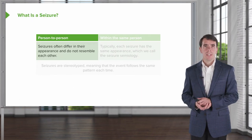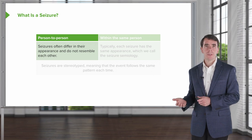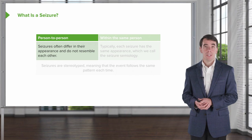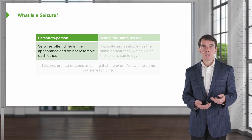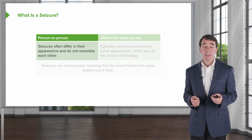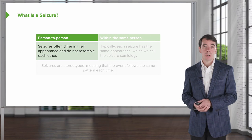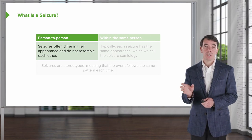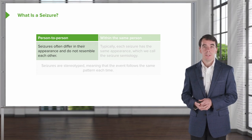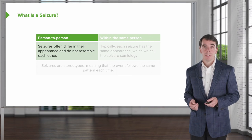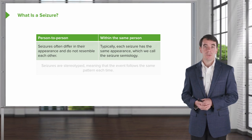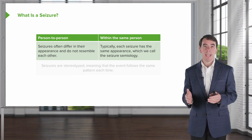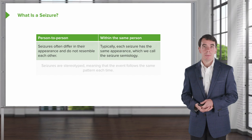Seizures are different person to person — they differ in their appearance and do not resemble each other. Classically, we think about seizures where someone passes out, jerks and shakes all over, and may be incontinent or bite their tongue. But sometimes seizures are much more subtle, showing up as a brief period where someone stares off and isn't able to converse or attend.